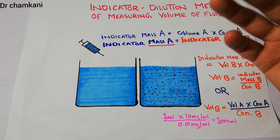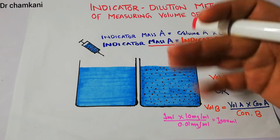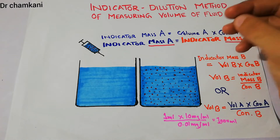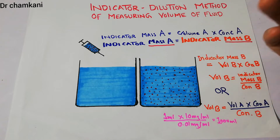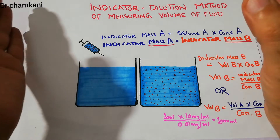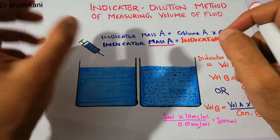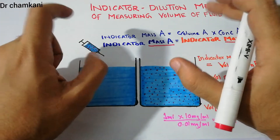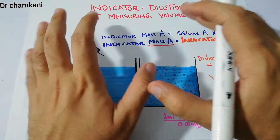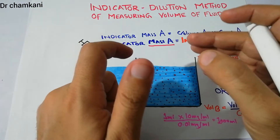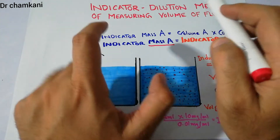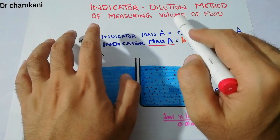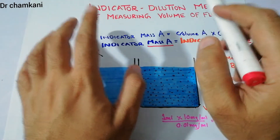Now how we can determine how much fluid is present in the intracellular compartment, how much fluid is present in the interstitial fluid, how much fluid is present in the plasma, and how much total fluid is present in the human body. To understand those things we need to understand a simple concept: the indicator dilution method of measuring the volume.